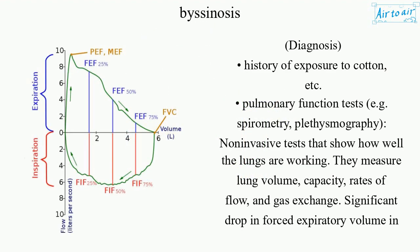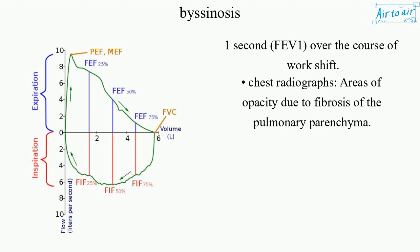Diagnosis: History of exposure to cotton, etc. Pulmonary function tests, e.g. spirometry. Plethysmography — non-invasive tests that show how well the lungs are working; they measure lung volume, capacity, rates of flow, and gas exchange. Significant drop in forced expiratory volume in 1 second (FEV1) over the course of a work shift. Chest radiographs showing areas of opacity due to fibrosis of the pulmonary parenchyma.